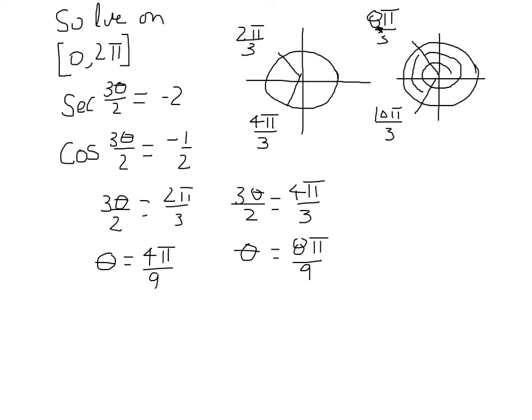Now those two angles, 8 pi over 3 and 10 pi over 3, are outside of this domain here, 0 to 2 pi. But remember that theta is being multiplied by 3 halves. So what if we were to multiply both sides by 2 thirds to solve for theta, would we still be inside that domain?